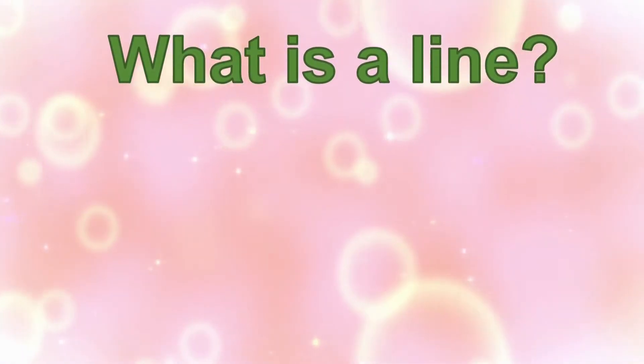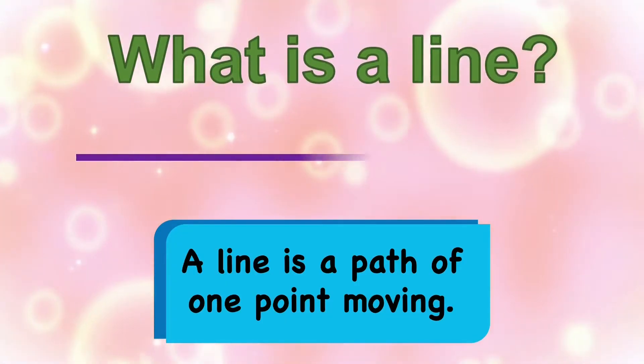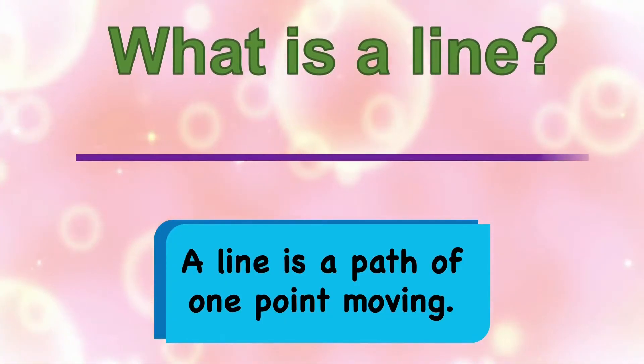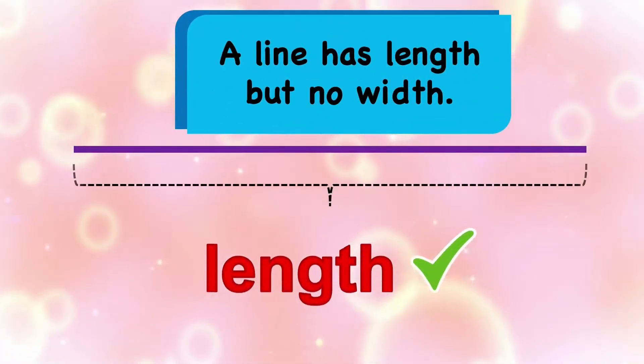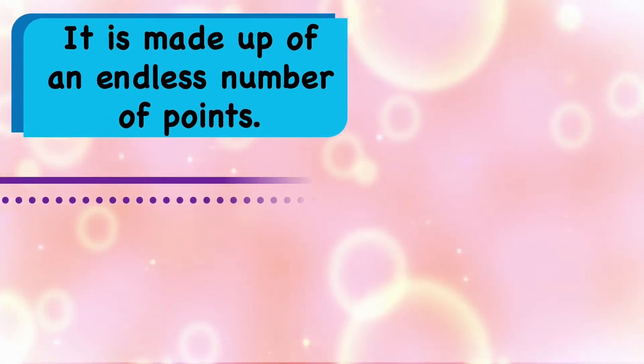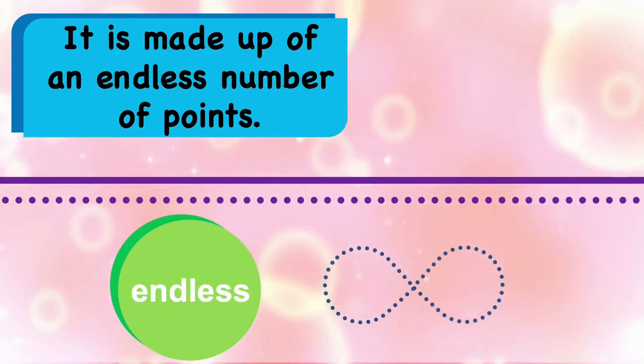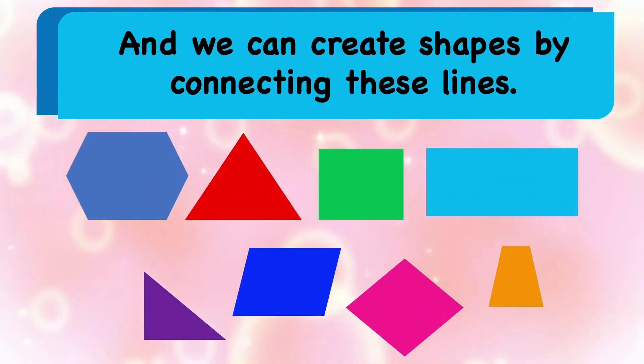What is a line? A line is a path of one point moving. A line has length but no width. It is made up of an endless number of points, and we can create shapes by connecting these lines.